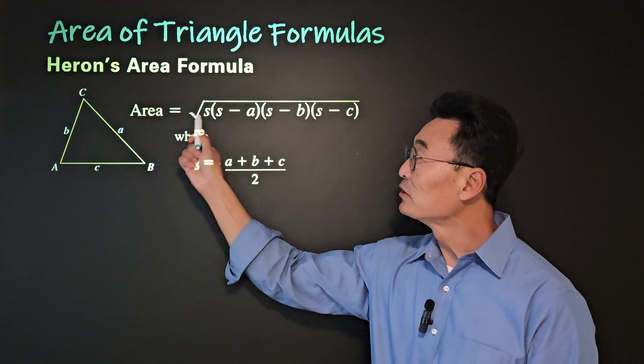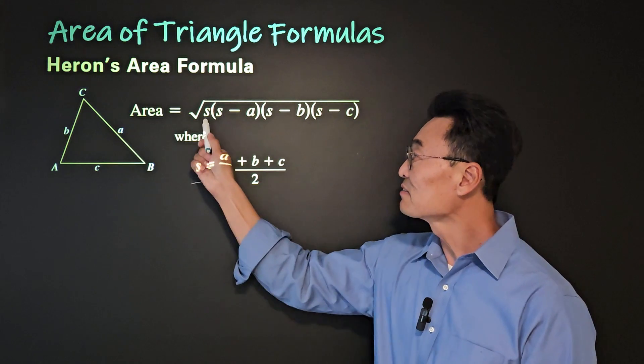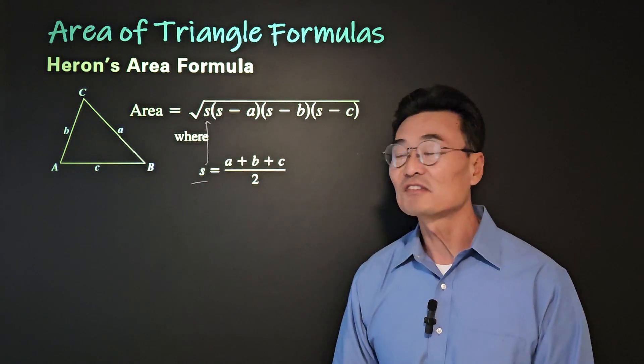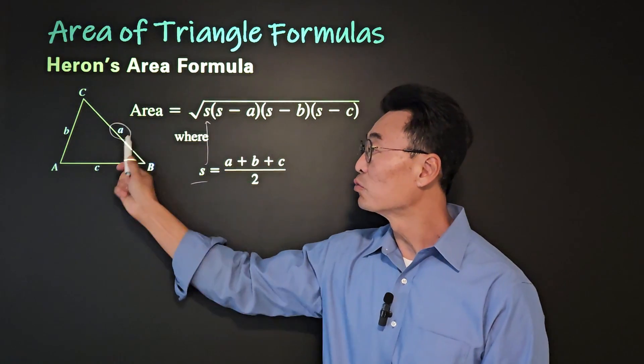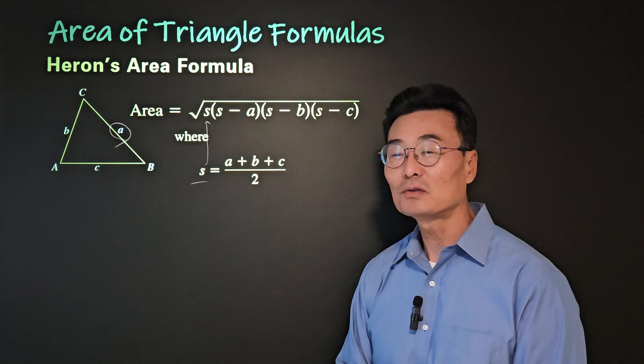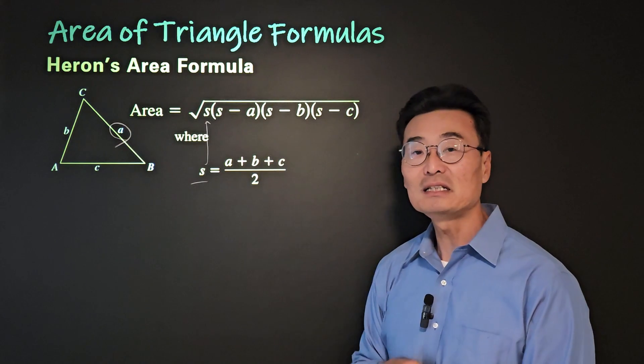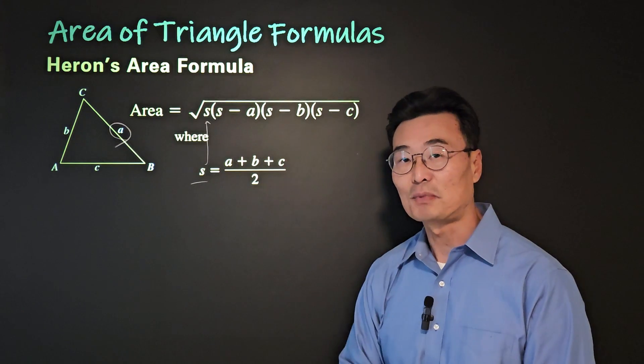And then once you find the value of s, to find the area, you take the square root of s times s minus a, or s minus one side of the triangle, times s minus b, times s minus c.